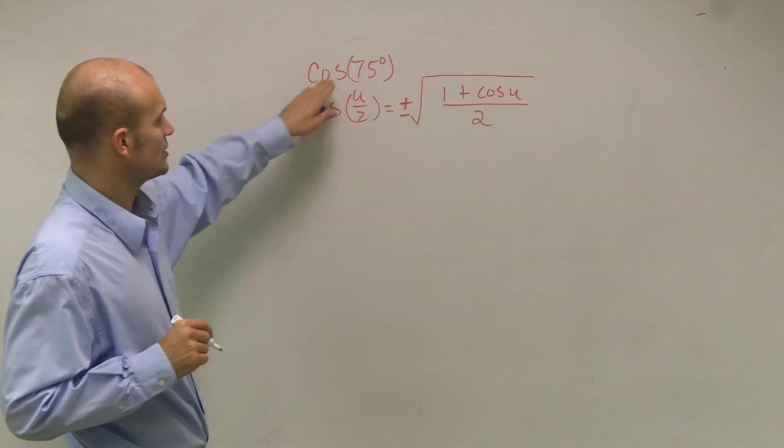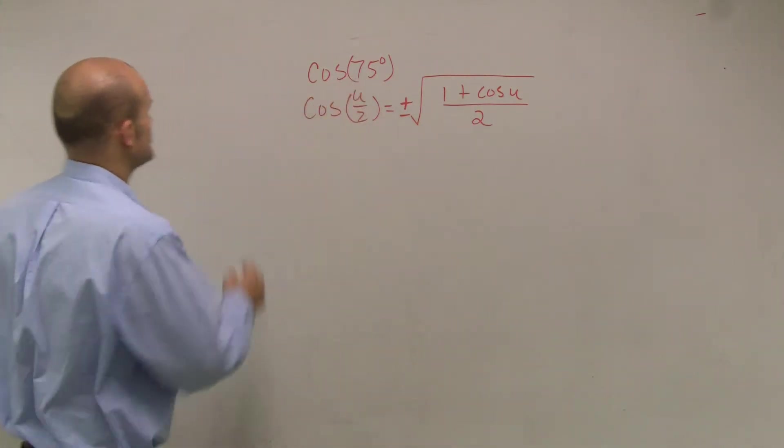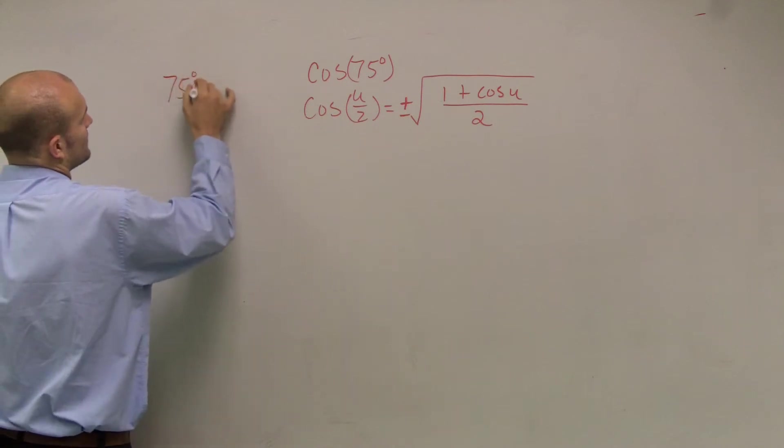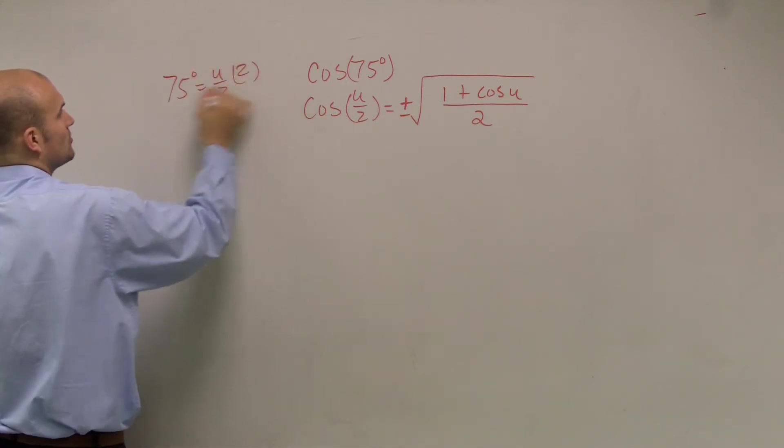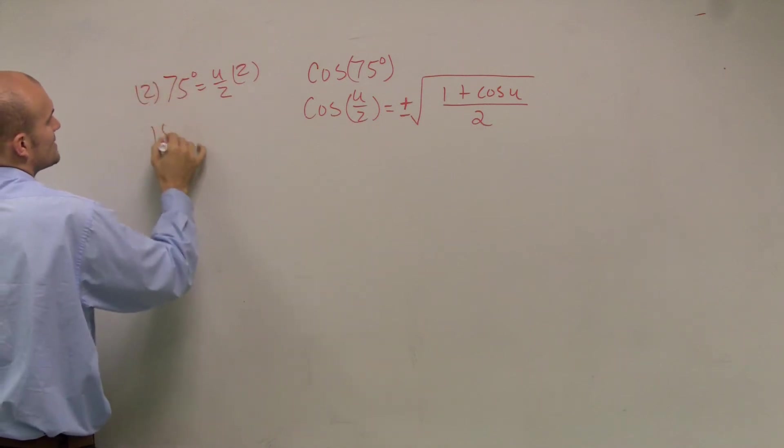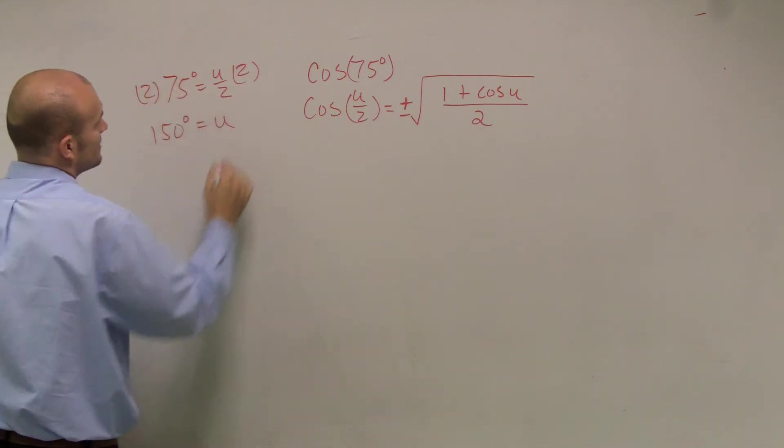So if I know that the cosine of 75 degrees is u over 2, I need to figure out what u equals. So to do that, I'm going to multiply by 2 on both sides, and I get 150 degrees equals u.